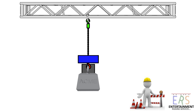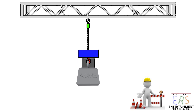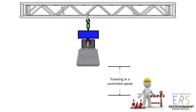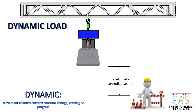Here we have a typical electric chain hoist suspended from our magical floating truss. The hoist in turn is supporting our wonderful ACME load. When we start to lift the ACME load at a controlled speed, we create what is called a dynamic load. Dynamic means movement characterized by constant change, activity, or progress — so as long as the load is moving, it's creating a dynamic load on the truss.